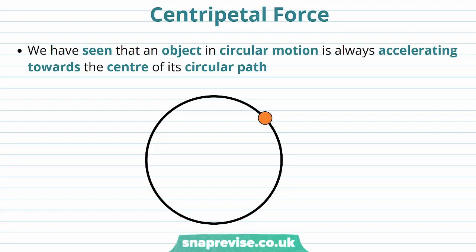We're firstly going to define what the centripetal force is. We have seen that an object in circular motion is always accelerating towards the centre of its circular path. This object in circular motion has a certain velocity v and an angular velocity omega. The angular velocity is constant, but the instantaneous velocity is constantly changing direction.